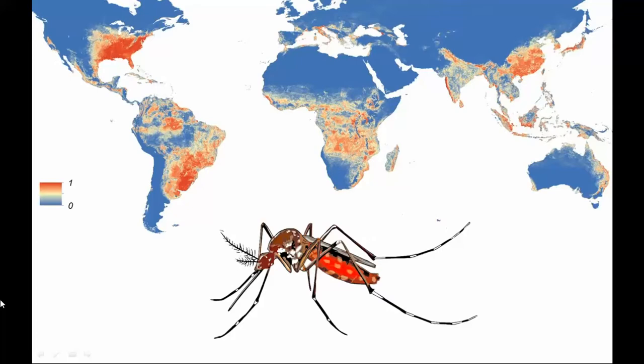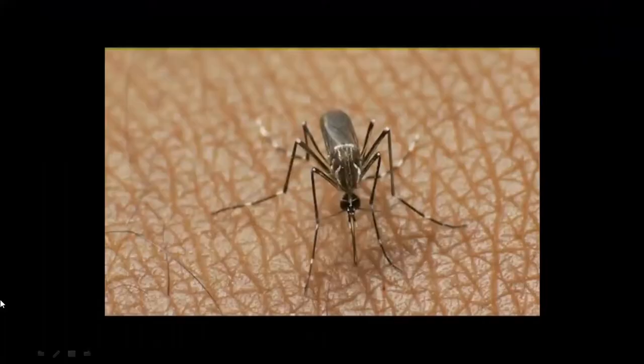This geographical limit corresponds approximately to a winter isotherm of 10 degrees Celsius. Aedes aegypti has been found as far north as 45 degrees north, but such invasions have occurred during warmer months and the mosquitoes have not survived the winters due to low temperatures. Aedes aegypti is also relatively uncommon above about 1,000 meters in height.